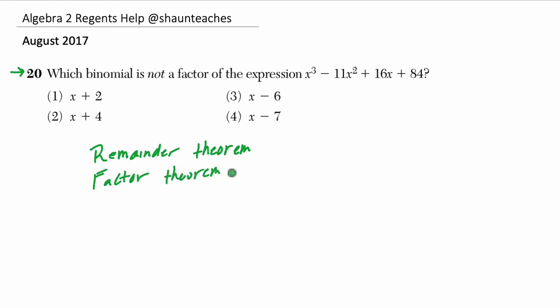So the remainder theorem says that if you are dividing by x minus c, so just look at that form, some x value minus some number. And that's what each of these are.